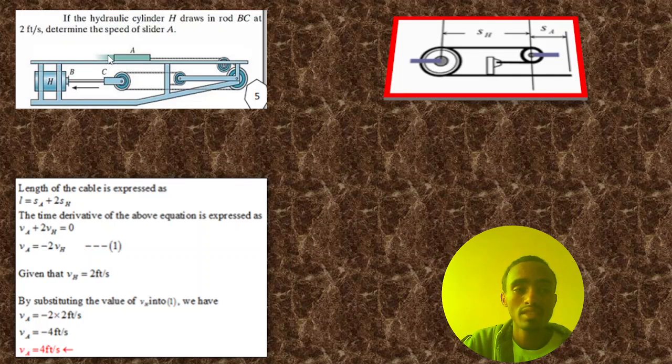This length is constant, which means the length of the cable is constant. The cylinder may move in this direction and the length here increases. When the cylinder is moving in this direction, this length increases.